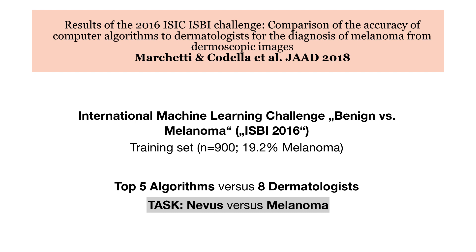As an example, this current study from Mike Marchetti and Noel Cordella worked with state-of-the-art algorithms. They conducted an international machine learning challenge asking research groups to provide algorithms to distinguish melanomas from benign skin lesions. For training, these groups got about 900 images — a rather small number in the field of current artificial intelligence research. They selected the top five and challenged them against eight board-certified dermatologists in diagnosing nevi and melanomas.